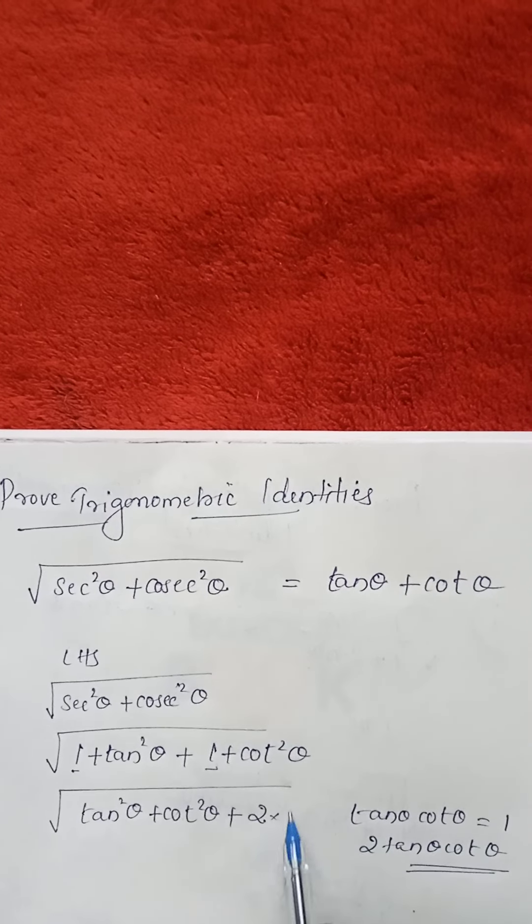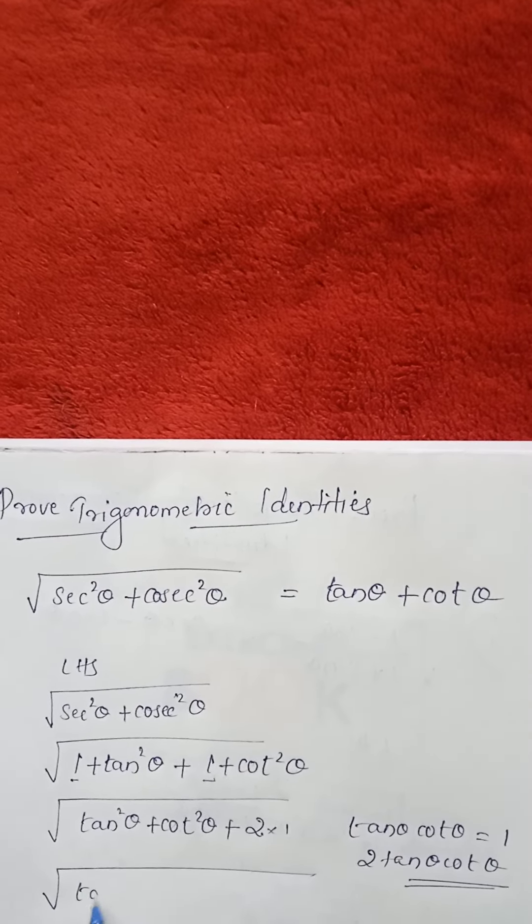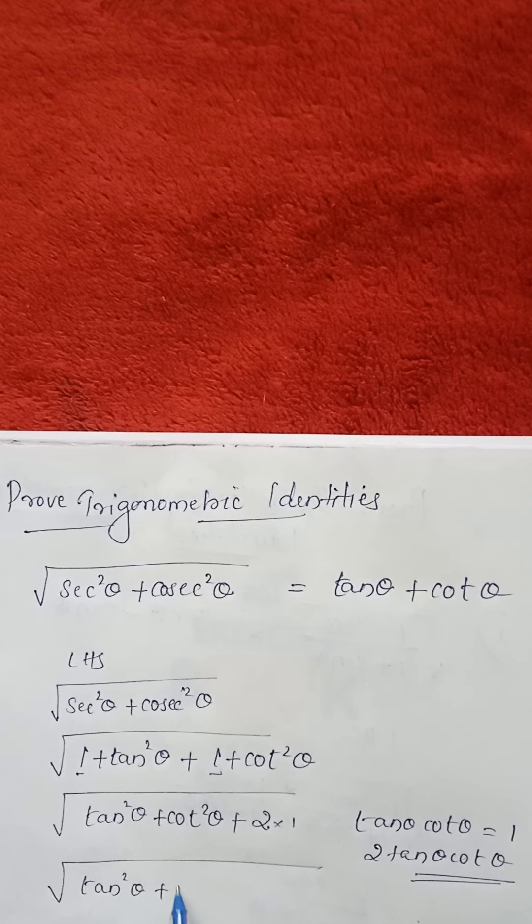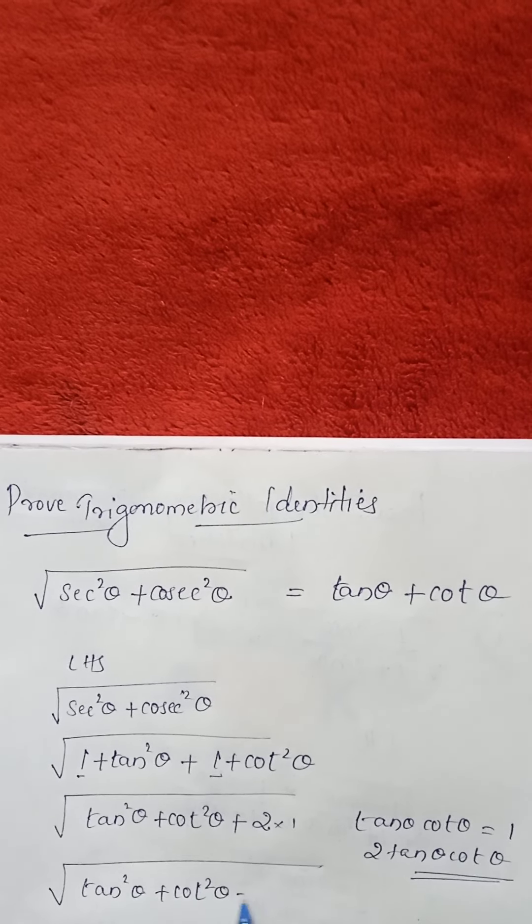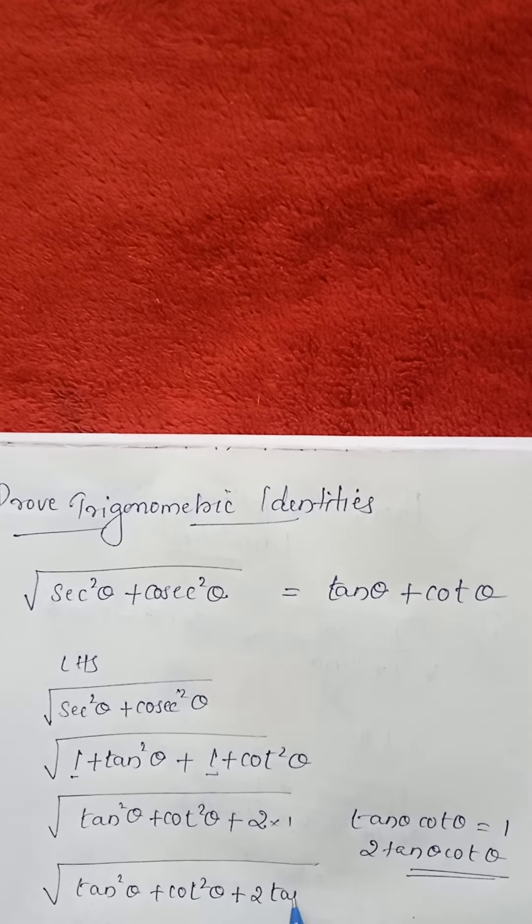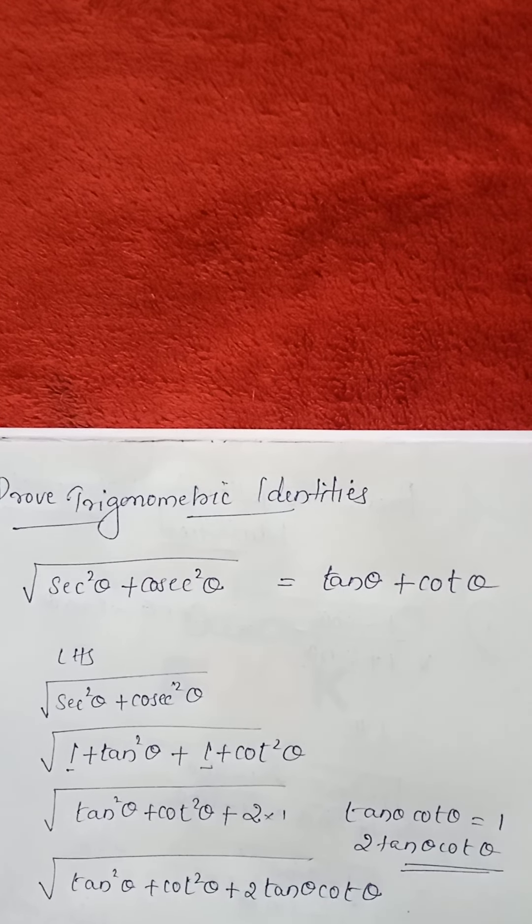That means 2 into 1. So root of tan square theta plus cot square theta plus 2 tan theta cot theta.